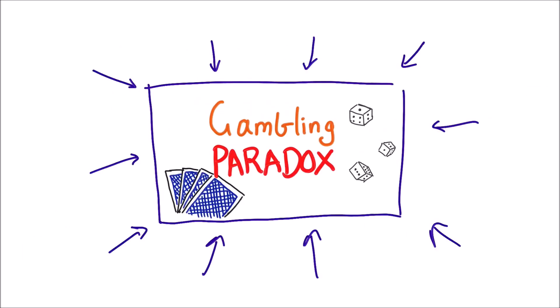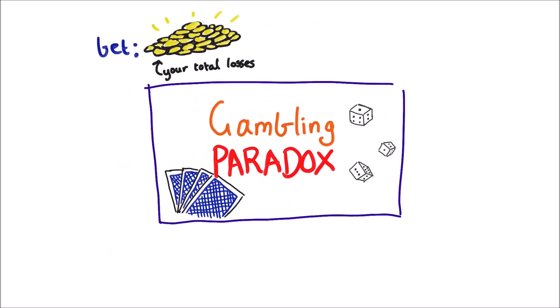Last video I talked about a strategy of betting called the martingale system. It's a strategy where you always chase the total amount you've lost so far by betting that total amount plus two, so that when you eventually do win you will win two guaranteed.